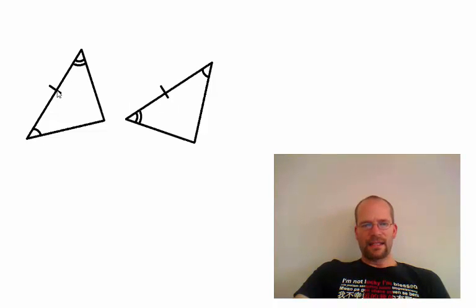Notice that the side is the included side, that it's the side between the two known angles, and that's important. So we can conclude that these two triangles are congruent by angle-side-angle.